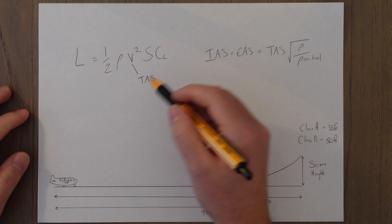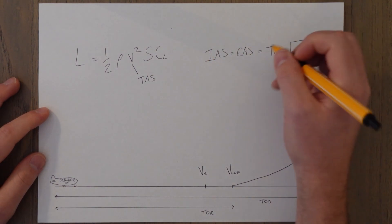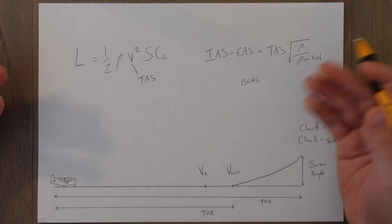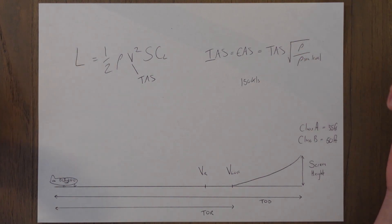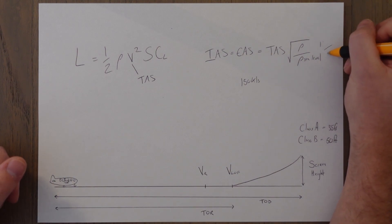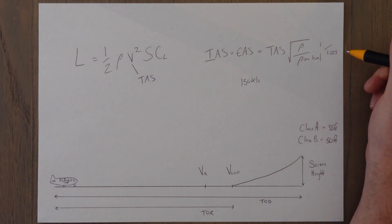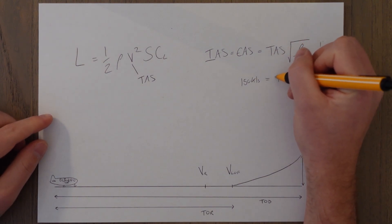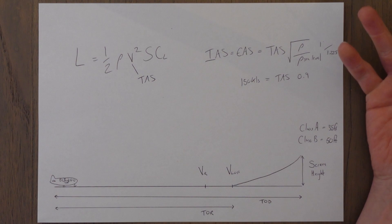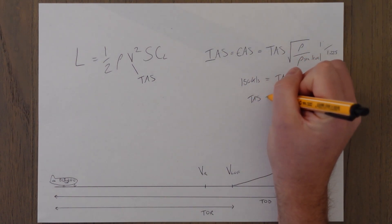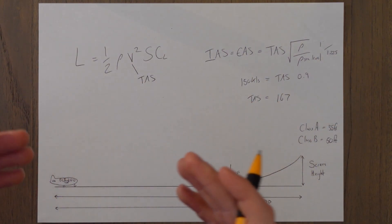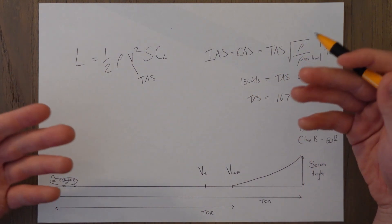For example, say we needed an indicated airspeed of 150 knots for takeoff at sea level — the true airspeed is also 150 knots because the square root of one is one. But if we go up to where density is maybe only 1 kg/m³, dividing by the sea level ISA value of 1.225 gives 0.9. So 150 knots equals TAS times 0.9, meaning the true airspeed must be 167 knots. We have to travel faster, covering more of the runway — a longer takeoff run and takeoff distance as a result of this increase in altitude.